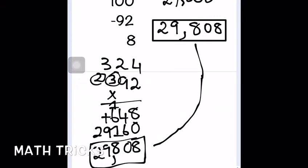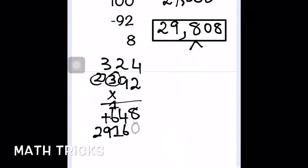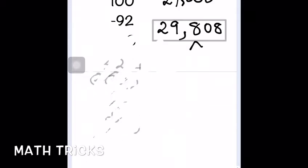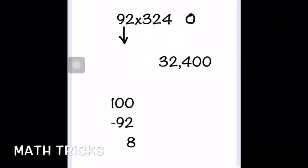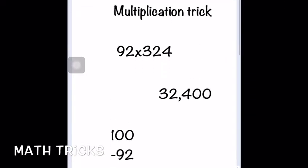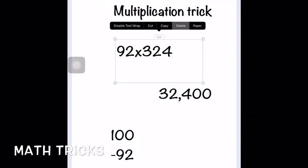Without the trick, some people forget to add the carryover, some people forget to add the zero in the next line — there are a lot of scenarios where you can go wrong. Solving multiplication problems in your head using this trick helps you avoid getting confused. Now we're going to head on to numbers above 100.